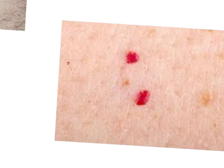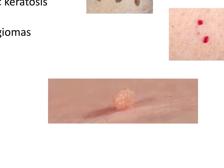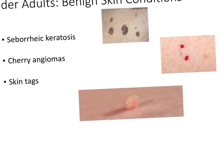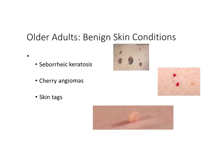Cherry angiomas look like a mole, but they're actually little blood vessels — they look like bright red moles. The last one is a skin tag. Skin tags are raised lesions that can actually hang and be long. They can happen to people who are not older adults, but the tendency increases with age. They can be in places like the armpits — benign outpouchings of skin.